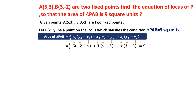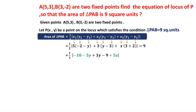Substituting: half times |5(-2 - y) + 3(y - 3) + x(3 + 2)| = 9. Expanding: 5 times -2 is -10, 5 times -y is -5y, 3 times y is 3y, 3 times -3 is -9, and (3 + 2) = 5, so 5x. This gives half times |-10 - 5y + 3y - 9 + 5x| = 9.